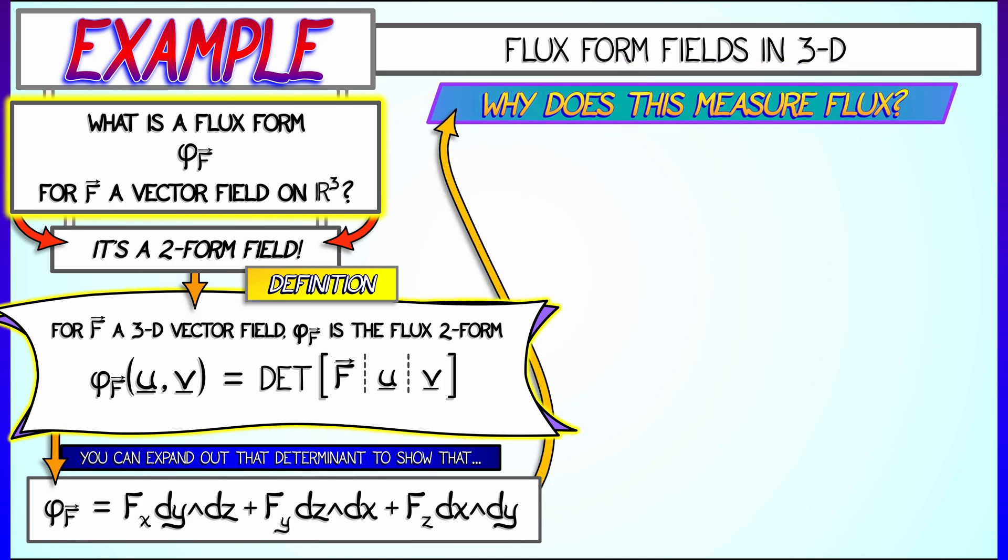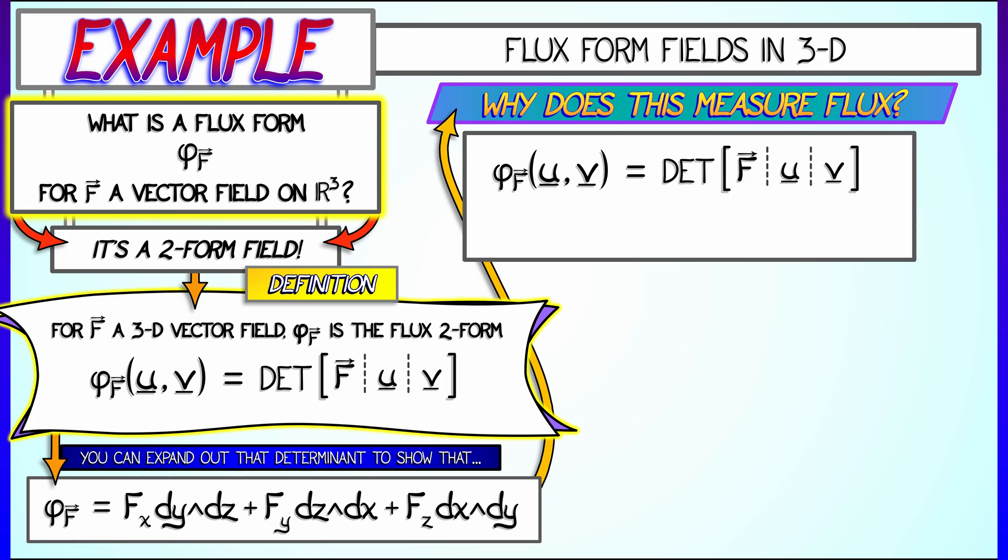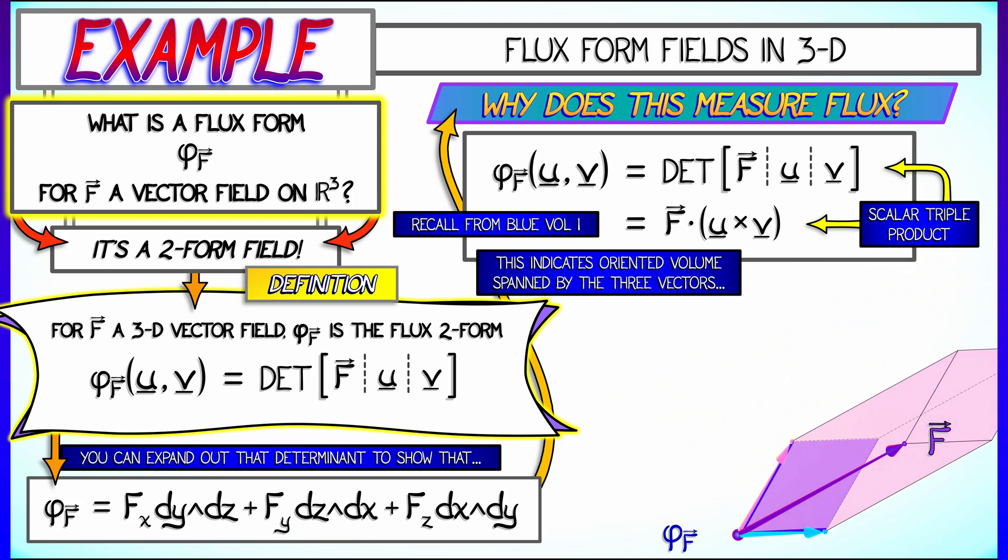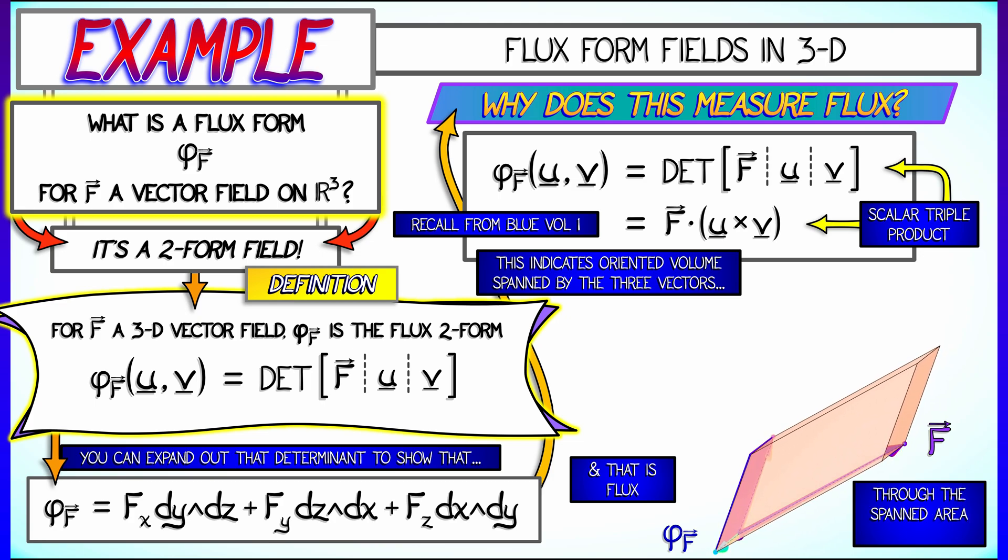Now, why does this really measure flux? Well, let's think about it. If we take the determinant of that matrix with columns F and U and V, then this is something we've seen before. This is the scalar triple product, F dot u cross v. And you remember that right back from volume one. The geometric interpretation is that it is an oriented volume spanned by those three vectors. And that is the flux of that vector field F passing through the area element spanned by U and V.